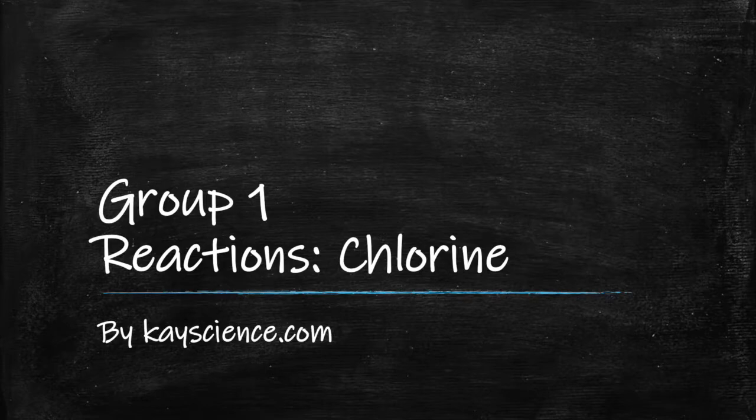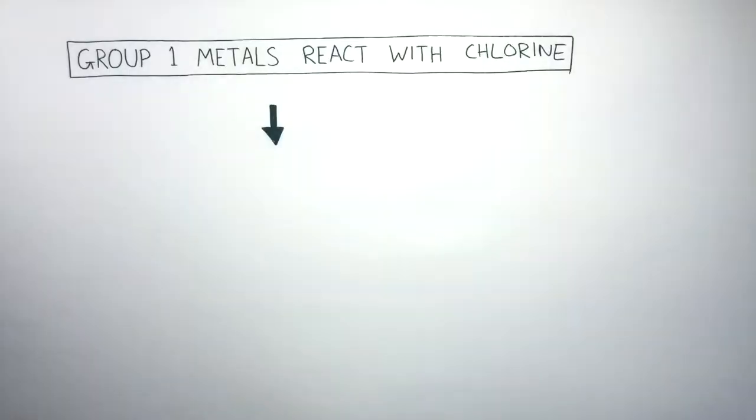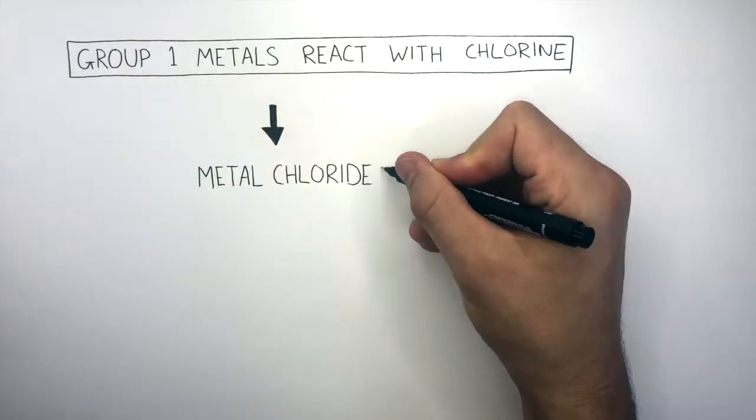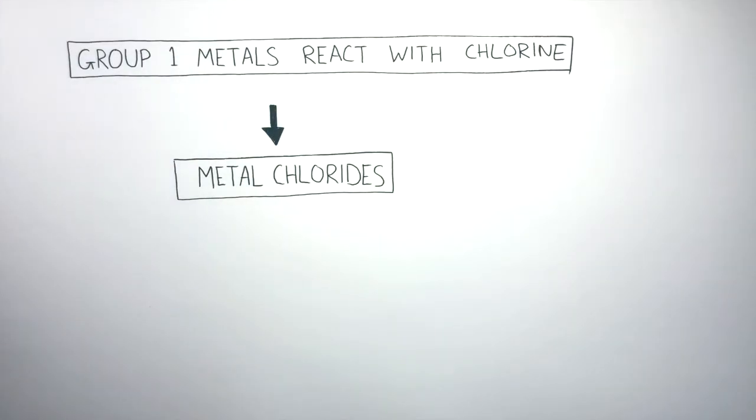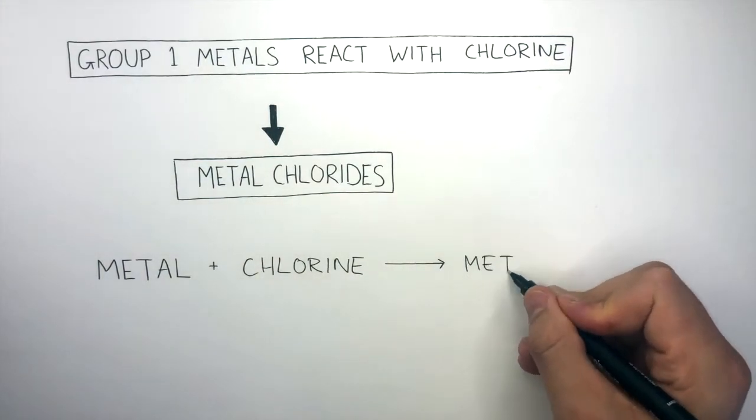Group 1 Reactions: Chlorine by Kscience.com. Group 1 metals react with chlorine to form metal chlorides. The general word equation for this chemical reaction is a metal plus chlorine forms a metal chloride.